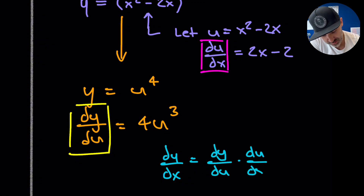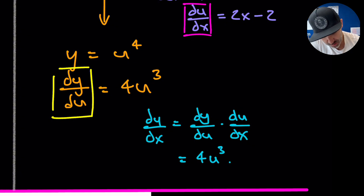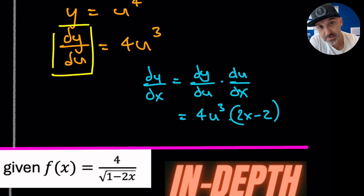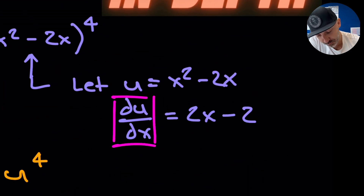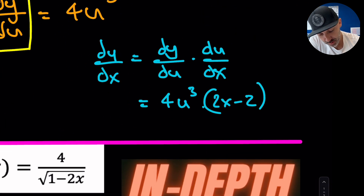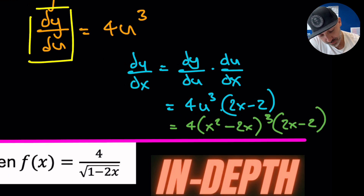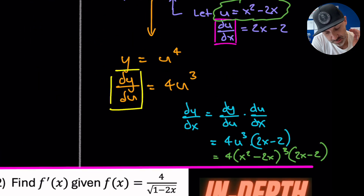The chain rule states that dy/dx equals dy/du multiplied by du/dx. Substituting in, we get 4u³ times (2x − 2). All we have to do now is replace u with the original substitution x² − 2x. So the final answer is 4(x² − 2x)³ times (2x − 2), and that is the final result using the chain rule.